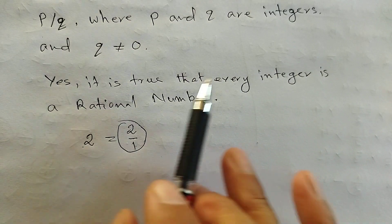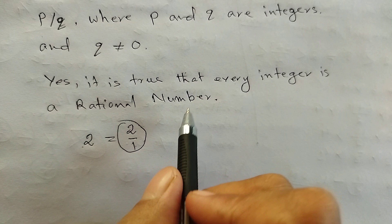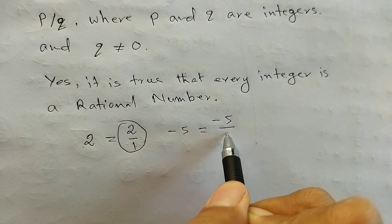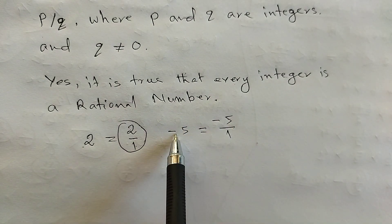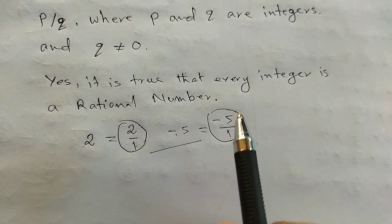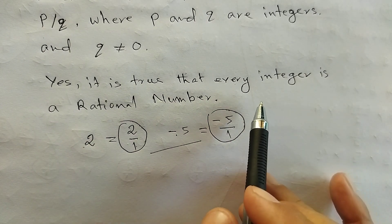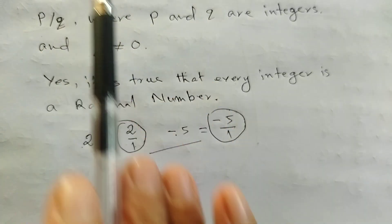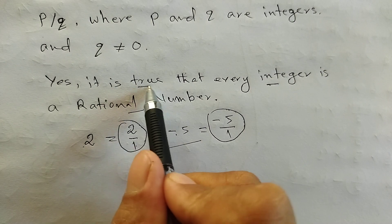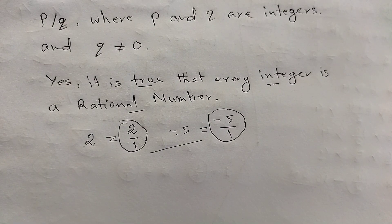Every integer is a rational number — we can give proof of this. For example, take minus 5. Minus 5 can be written as minus 5 divided by 1, which is in the form of P by Q. So this is a rational number, confirming that every integer is a rational number.